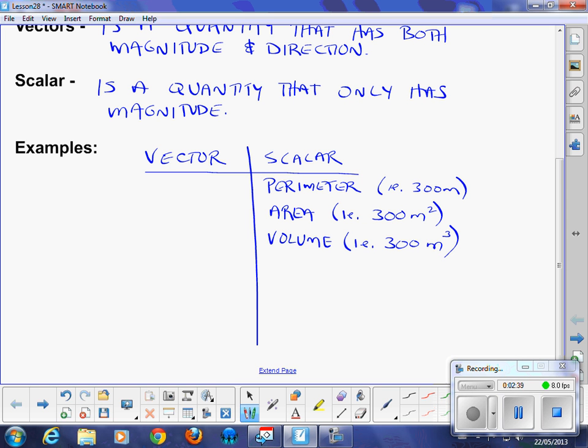Volume. You start seeing a pattern here. Volume, 300 cubic meters. Not a vector. It only has a magnitude. Distance is also a scalar quantity. How far is it to Stratford? It is 30 kilometers.